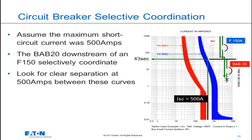It will take the F-150 a maximum of 43 seconds to clear this fault. Selective coordination at 500 amps is achieved for this pair of devices based upon the time-current characteristic curves.